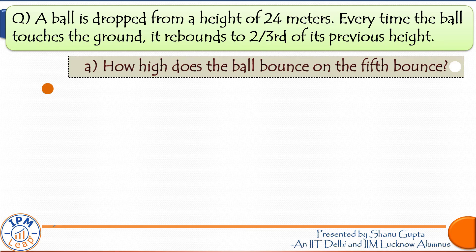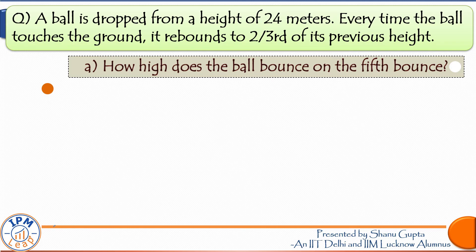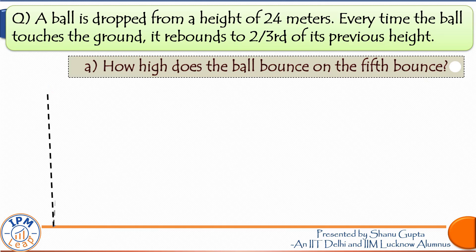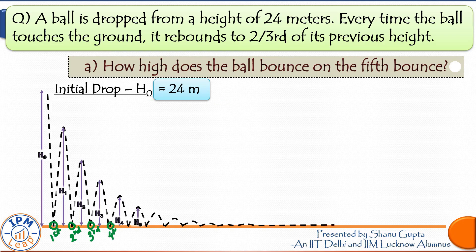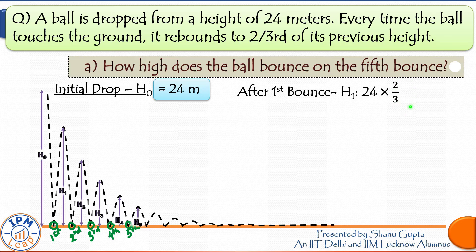So friends, the first part to this question is how high does the ball bounce on the fifth bounce? And you can see the bouncing ball animation which will help you visualize what's happening. Height of the initial drop denoted by H0 is 24 meters. The first time the ball rebounds, it will bounce back to two-thirds of this height. So H1 will be 24 times 2/3, that is 16 meters.